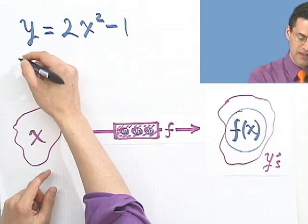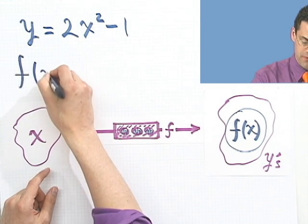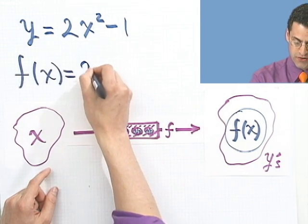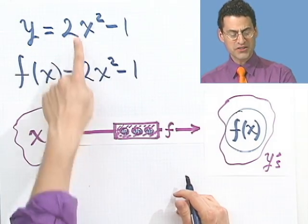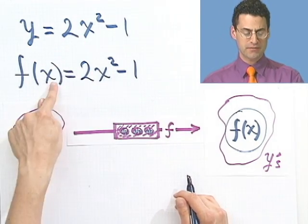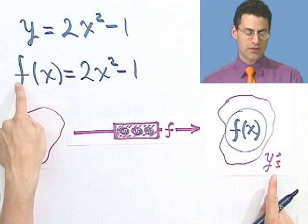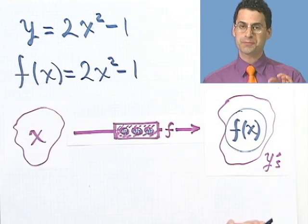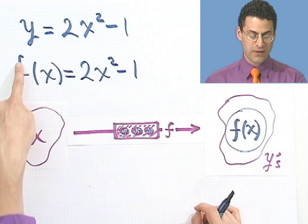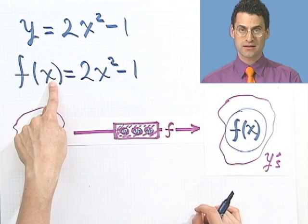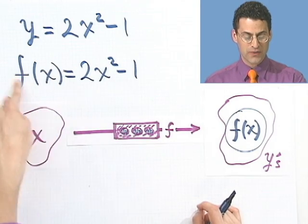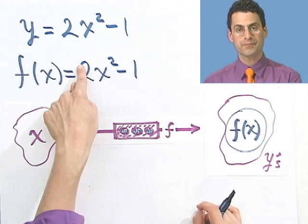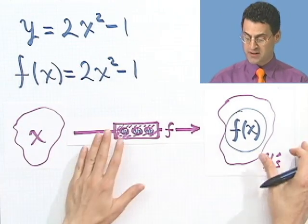So in fact, I can now write this as just f of x equals 2x squared minus 1. So these two things are saying the exact same thing, but this is my new notation. Instead of writing y, I'm going to write it as a function of x, where I'm very explicit. So y is a function f of x. So what that means is, if you input a value for x in here, to find out what this equals, I just plug it into here.